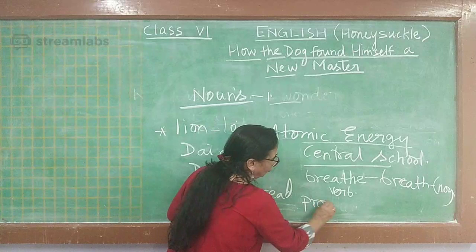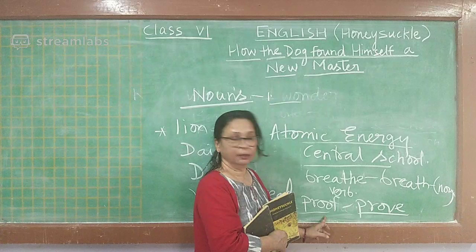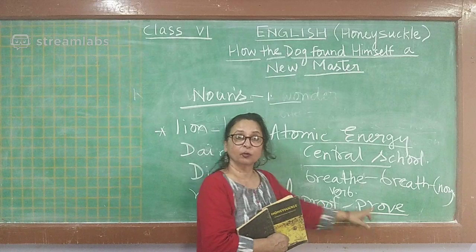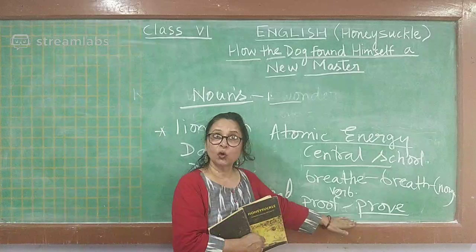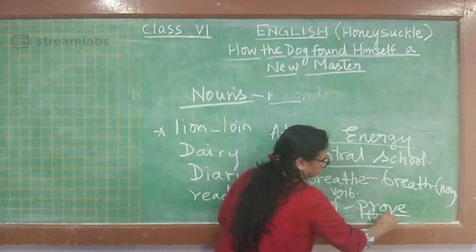Proof and prove: 'proof' — P-R-O-O-F — is a noun: 'Give me the proof.' 'Prove' — P-R-O-V-E — is the verb: 'She proved it.' Many children get confused between these. Pay attention to the spellings and the meanings. Proof is the noun, prove is the verb.